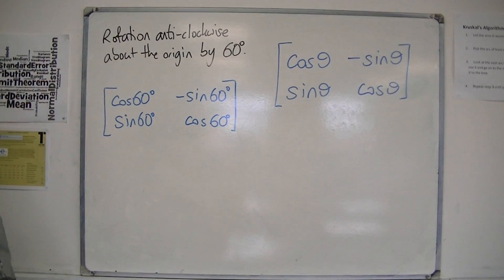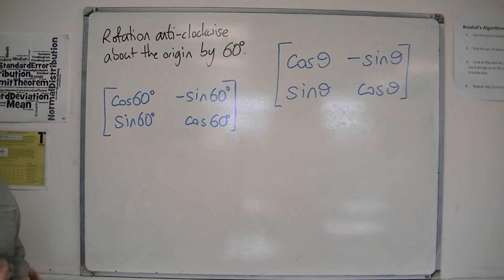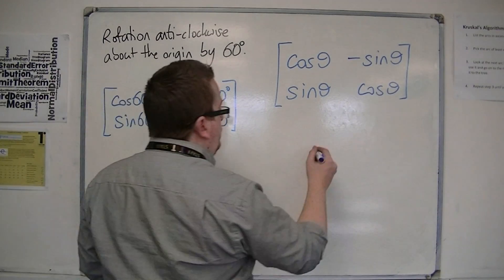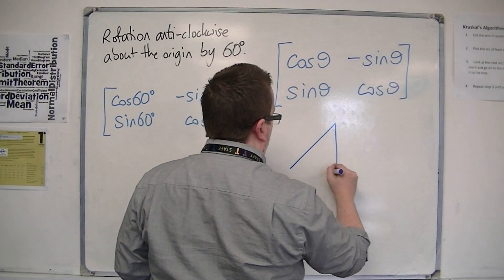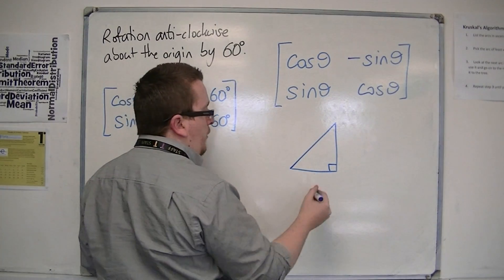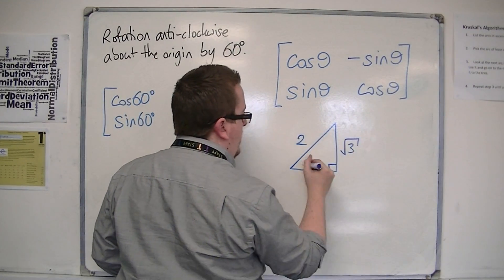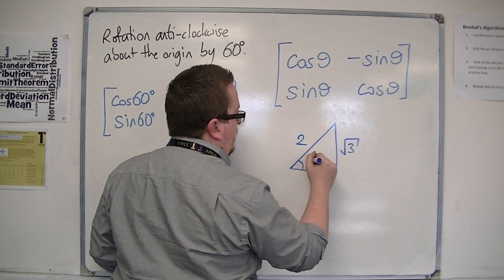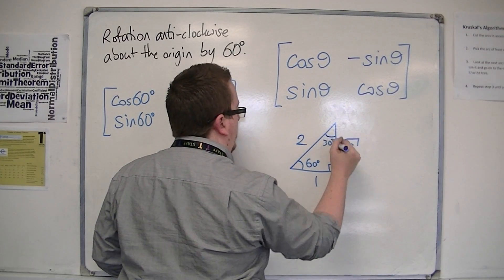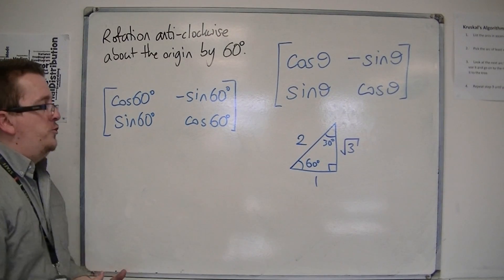All you need to do is plug these values into your calculator, or you can use one of the right-angle triangles that is useful to remember: 1, 2, and root 3. That gives you 60 degrees and 30 degrees — back in the old days when we had to actually learn these triangles.